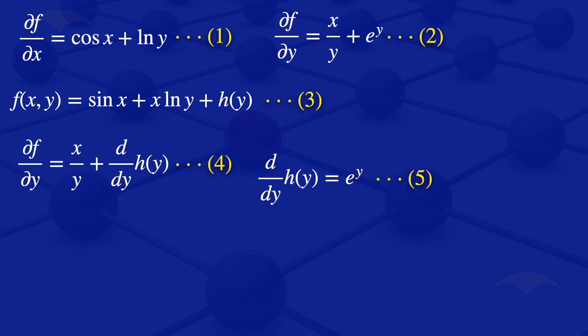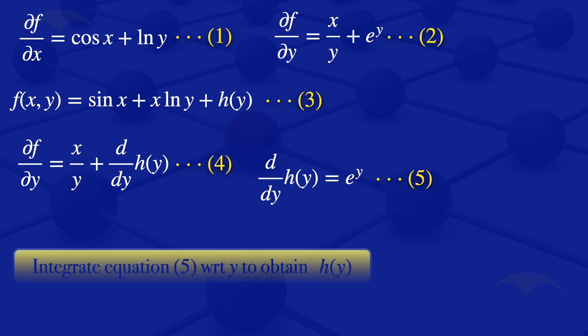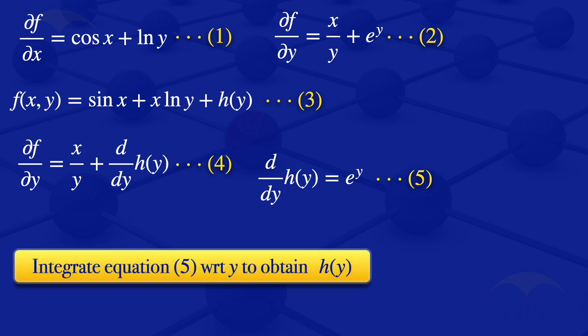We want to obtain the function h(y). Since we have a derivative, we integrate equation 5 with respect to y. On the left we get h(y). The integral of e^y with respect to y gives e^y. Adding a constant of integration, h(y) equals e^y plus c1, where c1 is a real number.